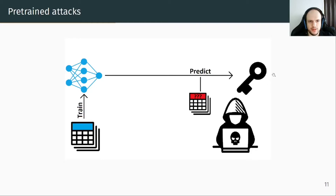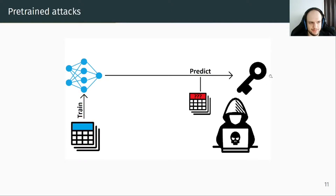The second additional approach consists in using a pretrained model, called the pretrained attack. In this situation, the attacker uses the dataset from domain B to pretrain a network and directly uses it with the attack set from domain A to guess the key.